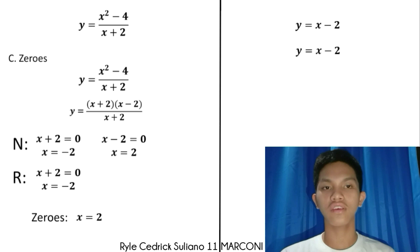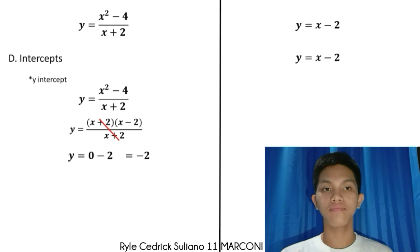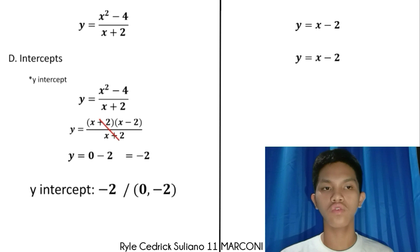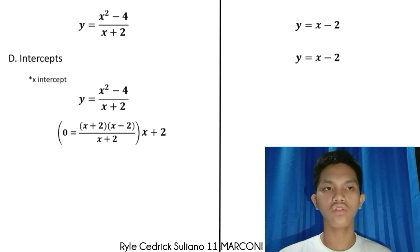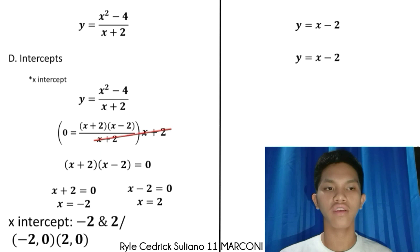For the y-intercept: reduce the function to lowest terms, cancel common factors, substitute x equals 0. The y-intercept value is negative 2, or the ordered pair (0, negative 2). For the second function, the y-intercept is also negative 2, or ordered pair (0, negative 2). For the x-intercept of the first function: reduce to lowest terms, substitute y equals 0, multiply by the LCD which is x plus 2, and cancel out.